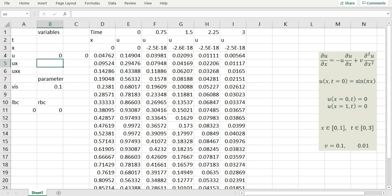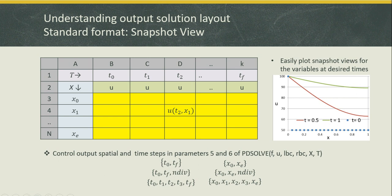The standard solution layout is shown in the table. In the first row we have a uniform distribution of the time variable. In the first column we have a uniform distribution of the spatial variable. In the second row we have a list of our variables, and the yellow region contains the solution values. To change the default divisions for time and space, you can modify arguments five and six of PDSolve — passing a third argument for the number of desired divisions, or the exact output points you want.